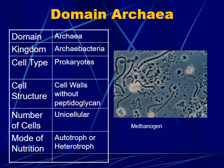The other bacterial domain, Archaea — with the kingdom called Archaebacteria — are also prokaryotes with none of the major organelles. The key difference is their cell walls lack the peptidoglycan mesh found in eubacteria. They are also unicellular and can be autotrophic or heterotrophic. An example shown here is a methanogen.